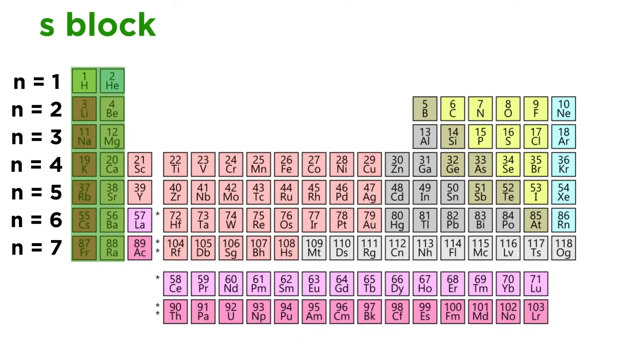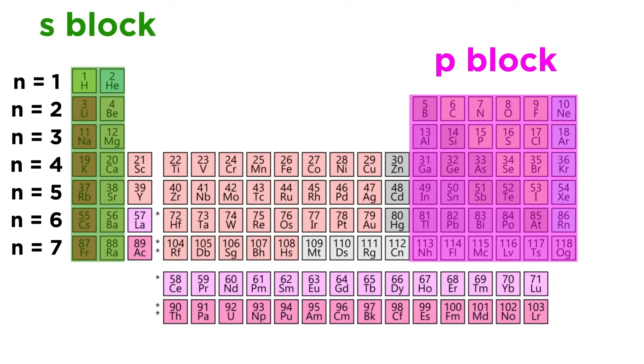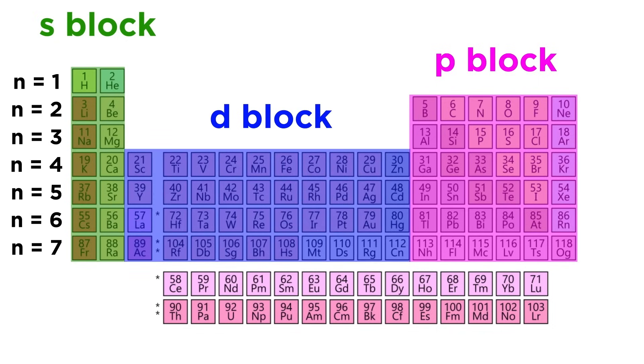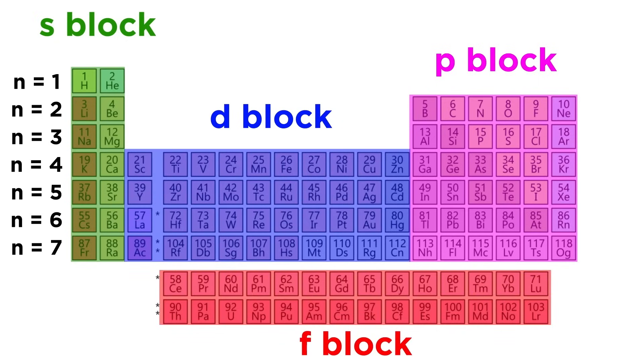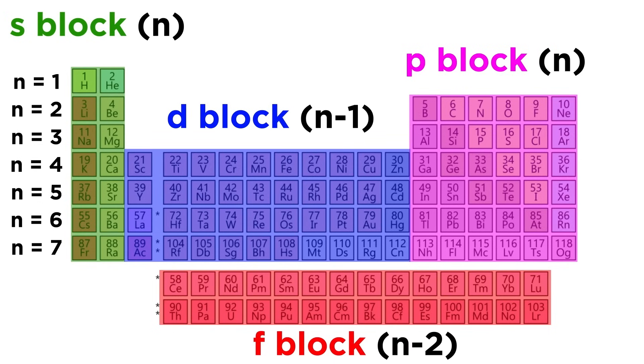Then we must know that this section containing groups 1 and 2 is called the S block. This section is the P block. The transition metals are the D block, and the lanthanides and actinides are the F block, though we won't be too concerned with F orbitals here. The only trick is that the D block is always one behind the period number in terms of principal quantum number, and the F block is always two behind.